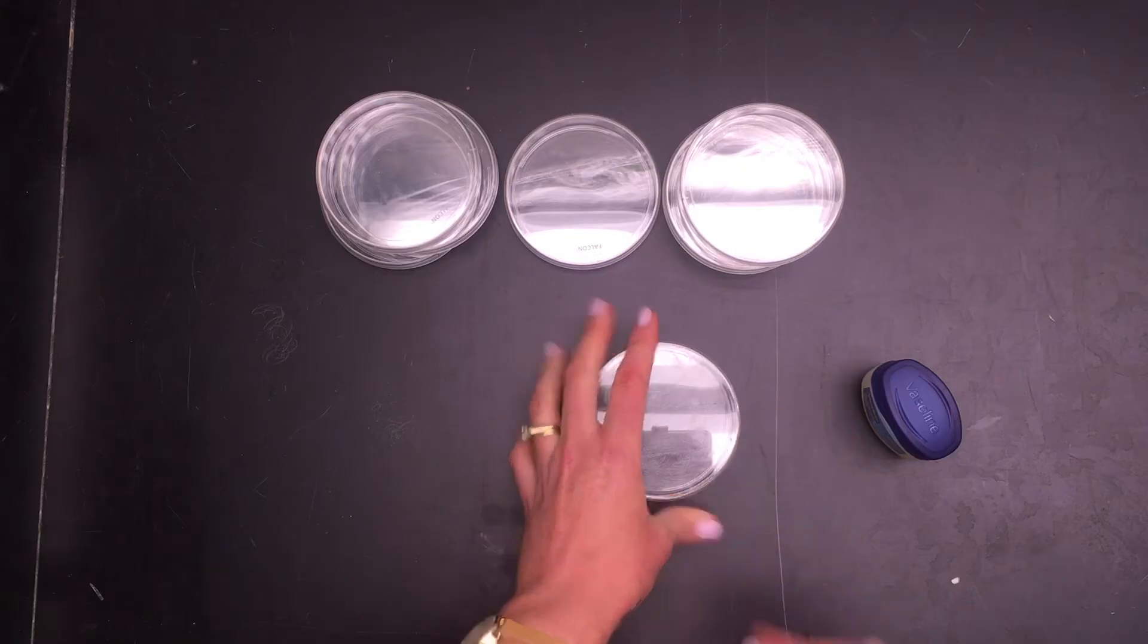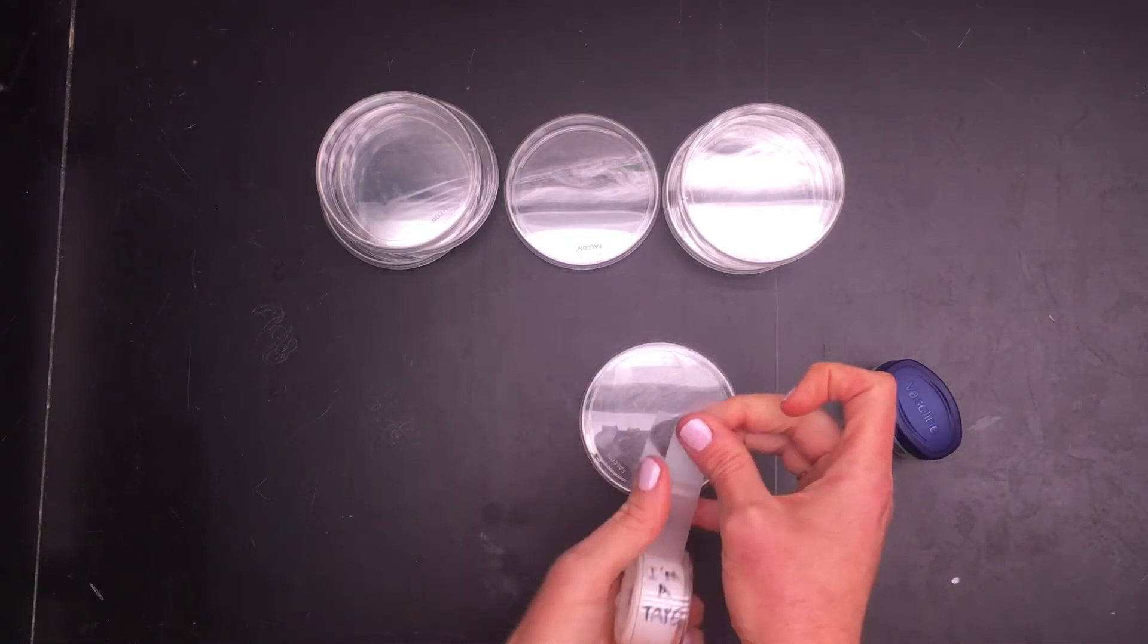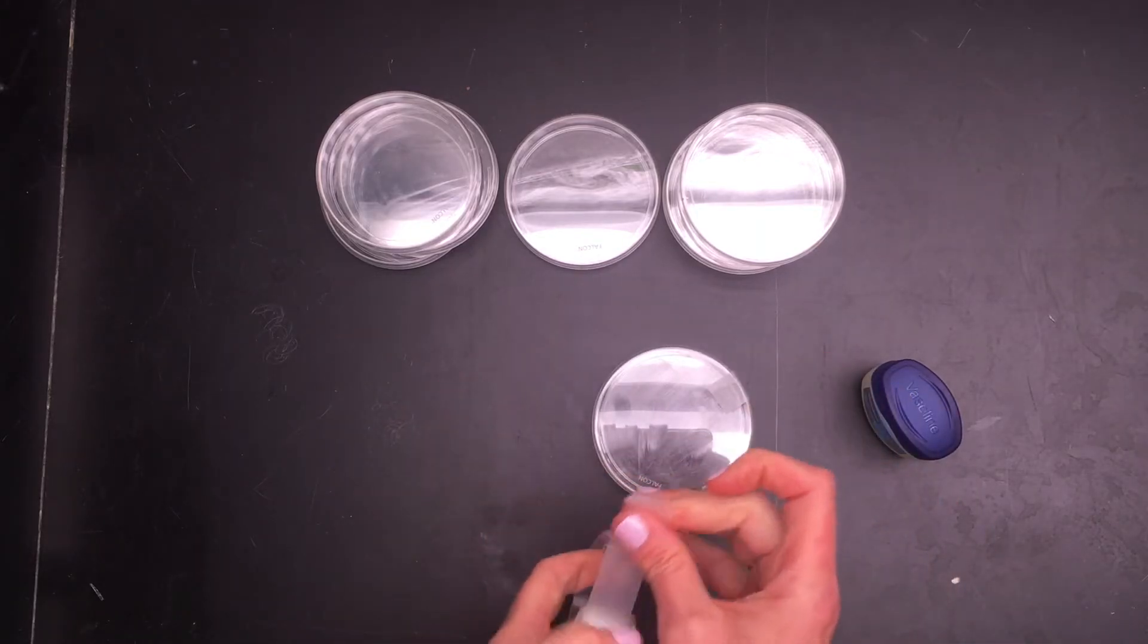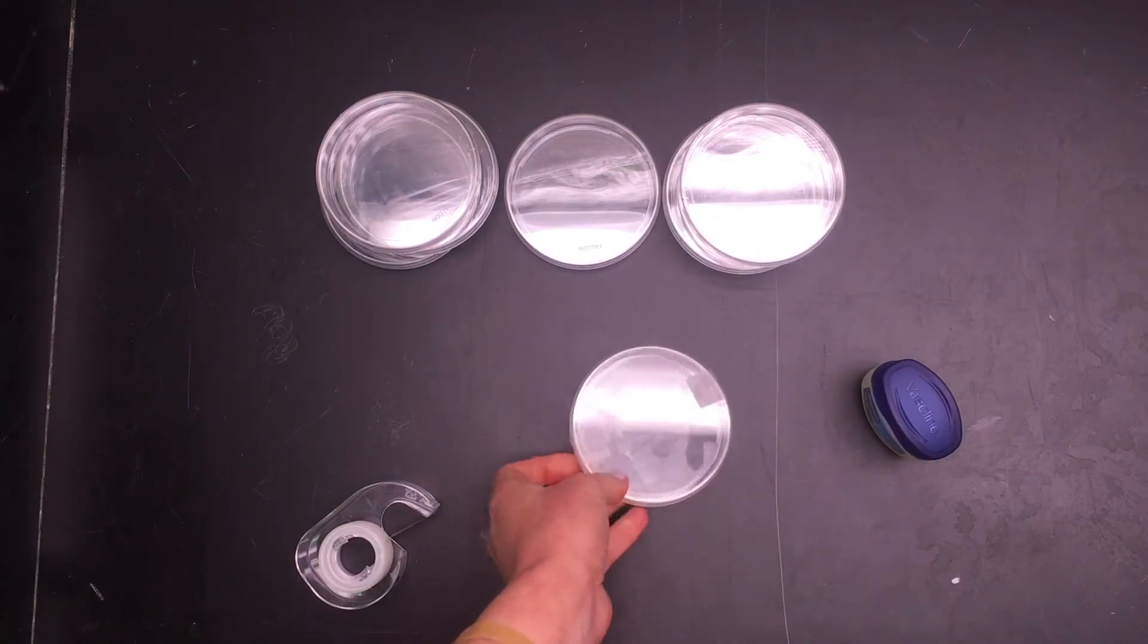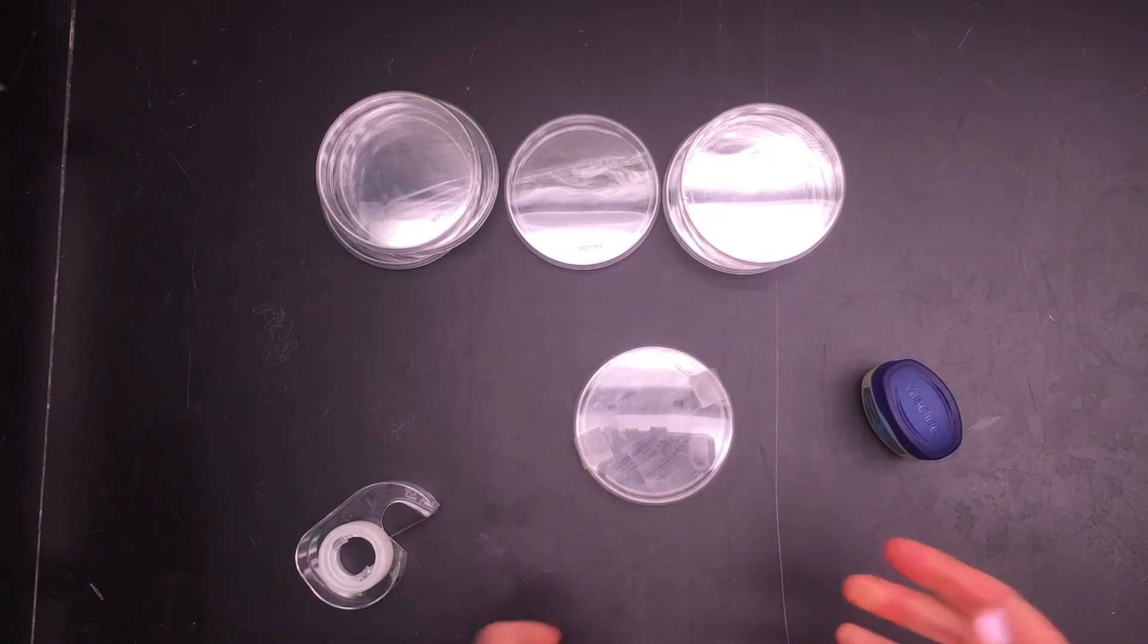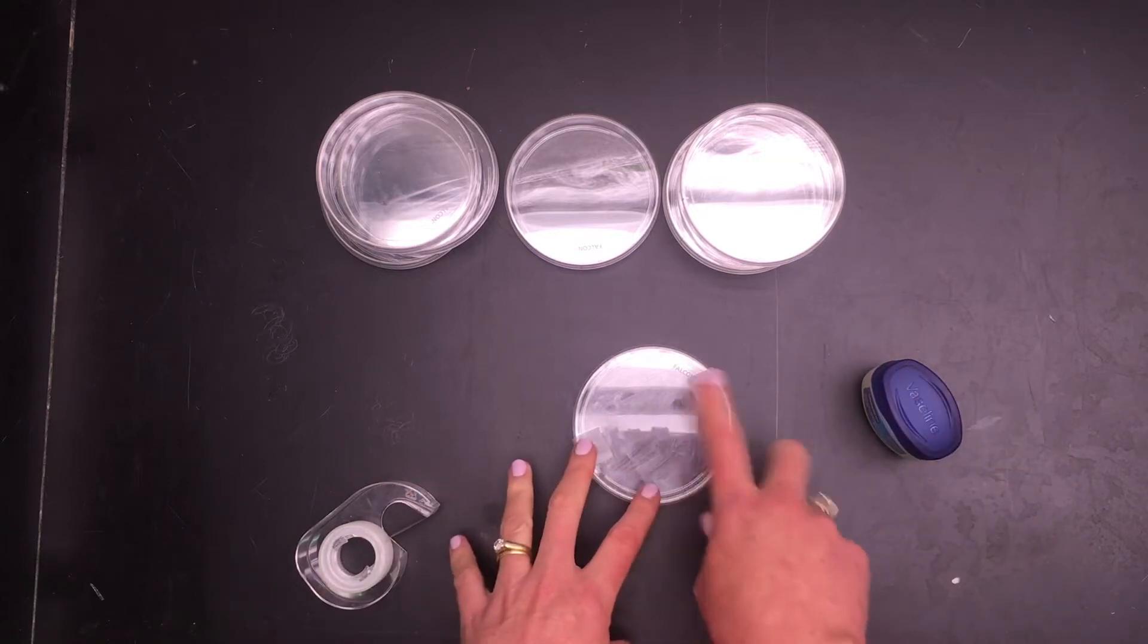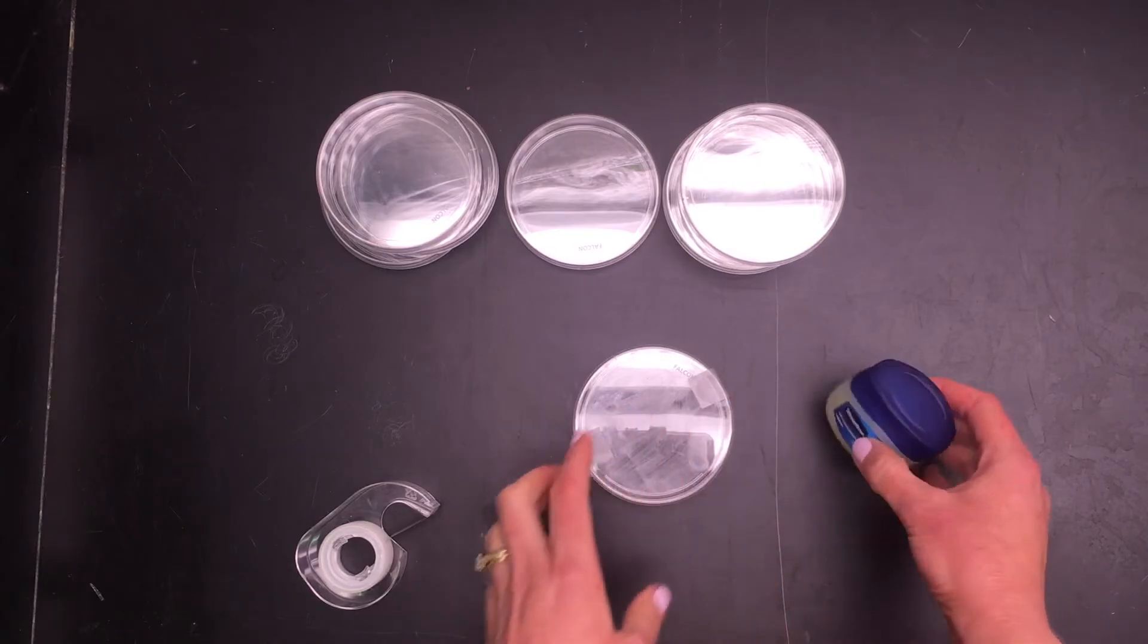Go ahead and close the dish and tape it closed with some regular scotch tape. You want to tape it so that it doesn't fall open in your backpack and gather lint or anything like that. If that does happen when you take it home or to work, you can just clean the dish out really well and then replace it with some petroleum jelly.